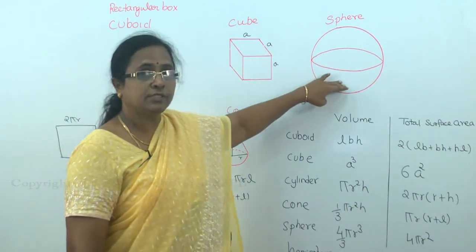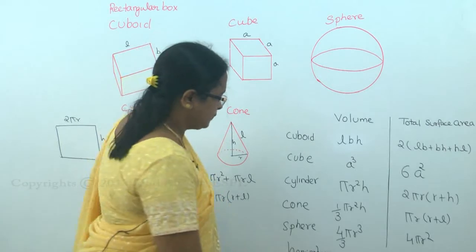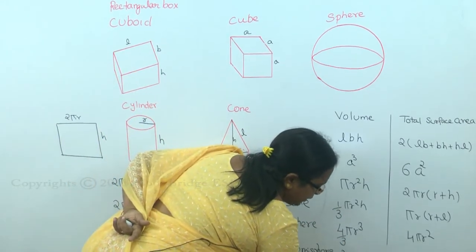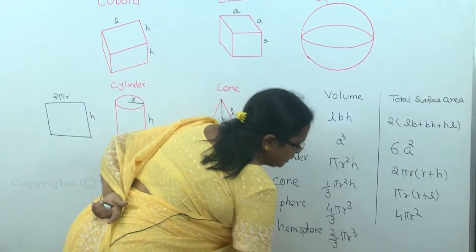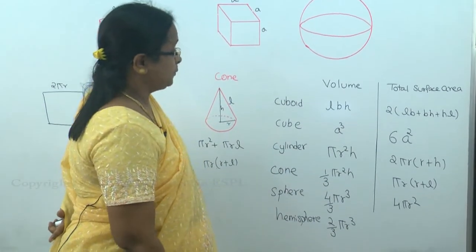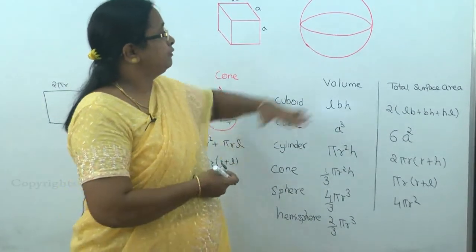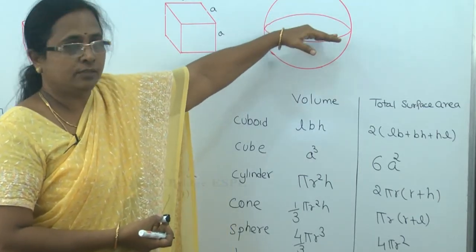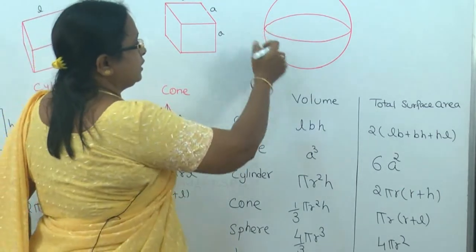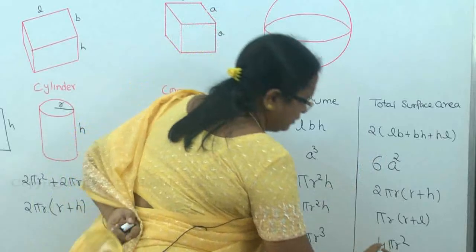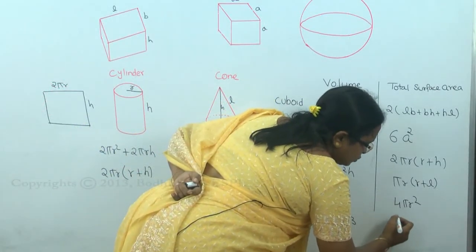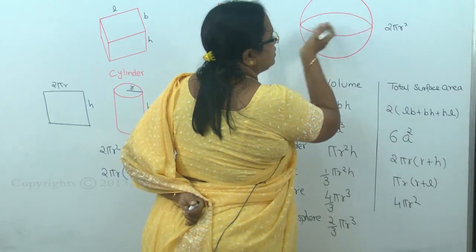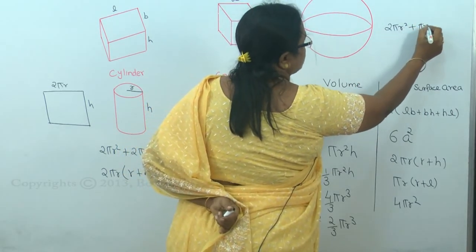A hemisphere is half of a sphere. Its volume is (2/3)πR³. For the total surface area, you take half the sphere's surface area, which is 2πR², and add the bottom circular face πR², giving a total surface area of 3πR².